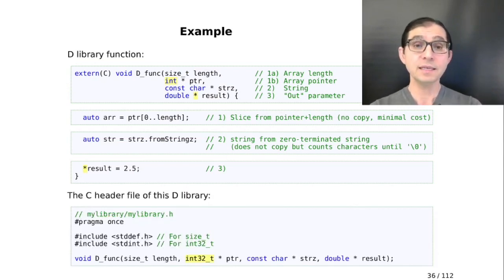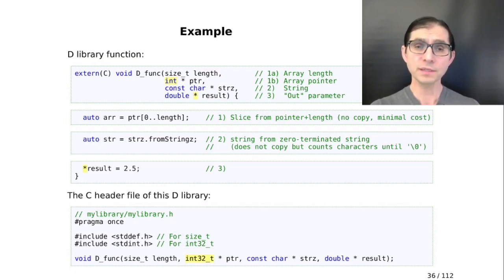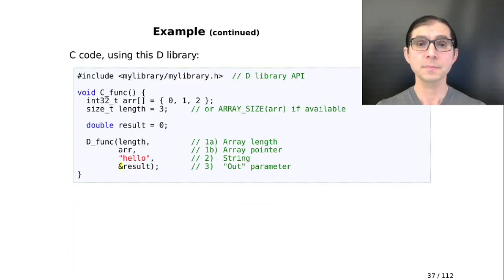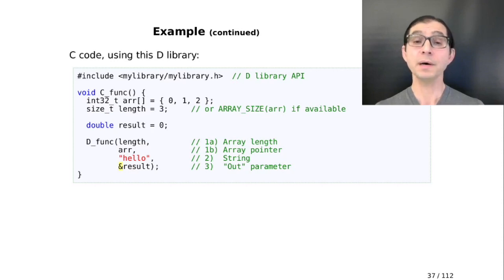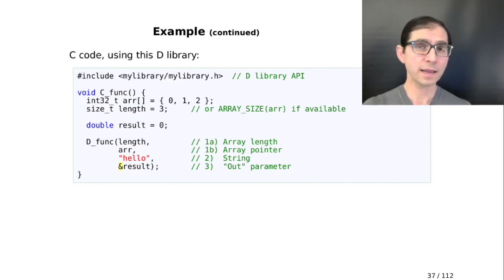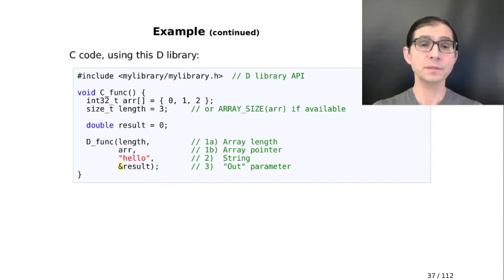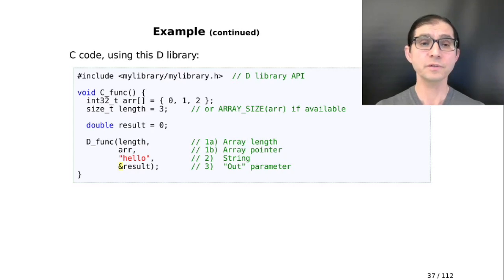The C header file of a D library like this would be almost one-to-one identical, except the int on the D side must be written as int32_t on the C side. Because size_t and int32_t are defined in certain header files, we need to include those as well. The C code using this D library must include our header file to get the function declaration. Here's an array with three elements, a hard-coded length of 3, a local result variable, and the D function is called with the length and pointer pair for the array, a zero-terminated string, and the address of result as our out parameter.